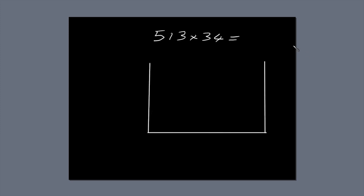The first thing you need to do is draw a box. Subdivide the box into three columns because the first number, 513, has three digits. You also have to subdivide the box into two rows because 34 has two digits. You end up with a box subdivided into six smaller boxes.